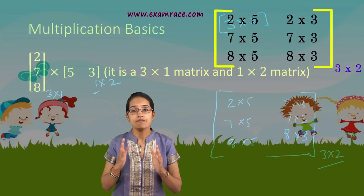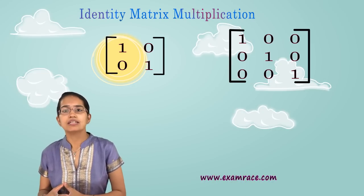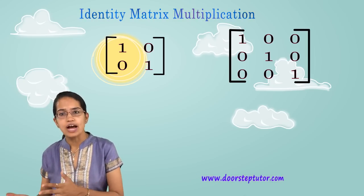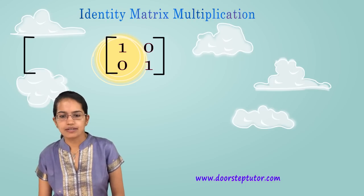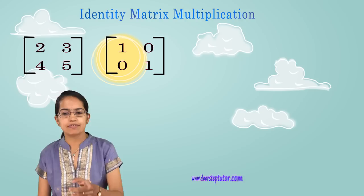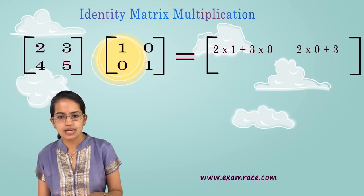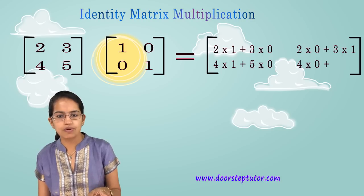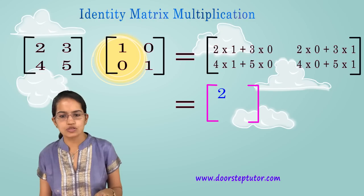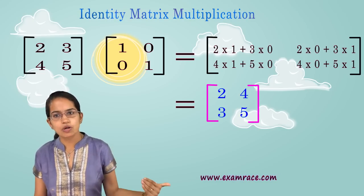Multiplication of matrices is a very important concept. When we multiply a matrix by an identity matrix, the result remains the same matrix — just as multiplying a number by 1 keeps it unchanged. For example, with matrix [2, 3, 4, 5] multiplied by the identity matrix: 2×1 + 3×0, 2×0 + 3×1, 4×1 + 5×0, 4×0 + 5×1 gives back 2, 3, 4, 5. We covered identity matrices in the previous lecture.